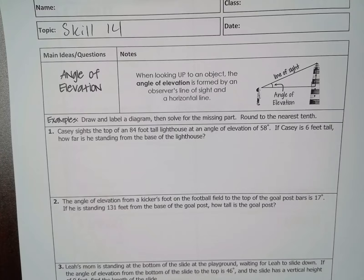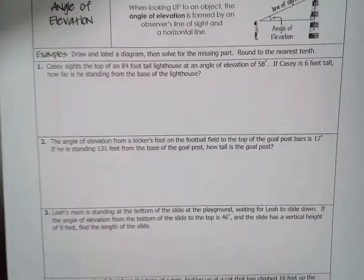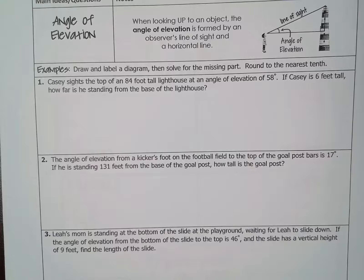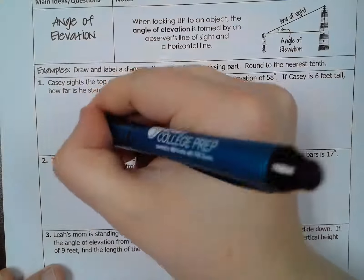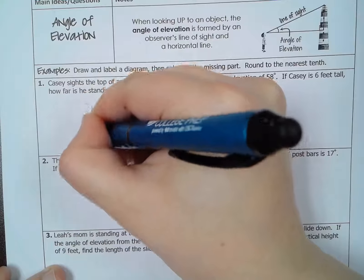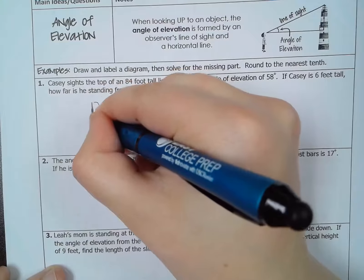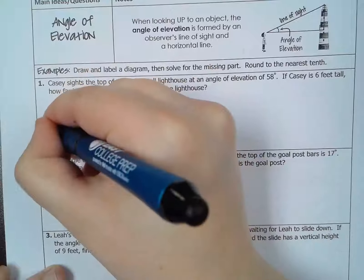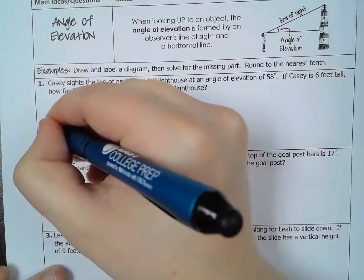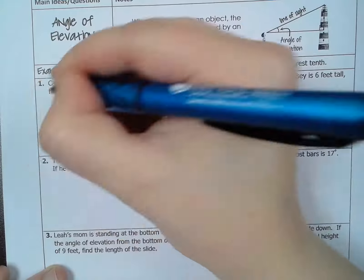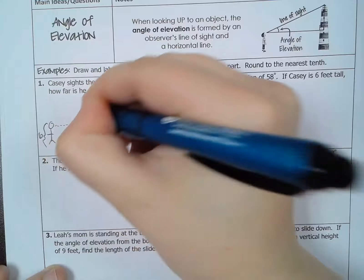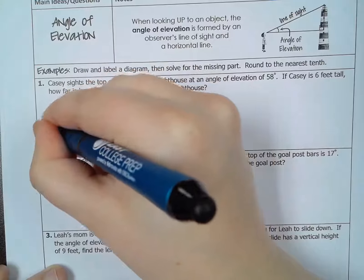You have to draw and label a diagram, solve for the missing part, and round to the nearest tenth. Casey sights the top of an 84-foot tall lighthouse at an angle of elevation of 58 degrees. If Casey is 6 feet tall, how far is he standing from the base of the lighthouse? So I have a lighthouse. The lighthouse is 84 feet. Here's Casey over here, and Casey is 6 feet tall. Casey can see the lighthouse and forms a right triangle.